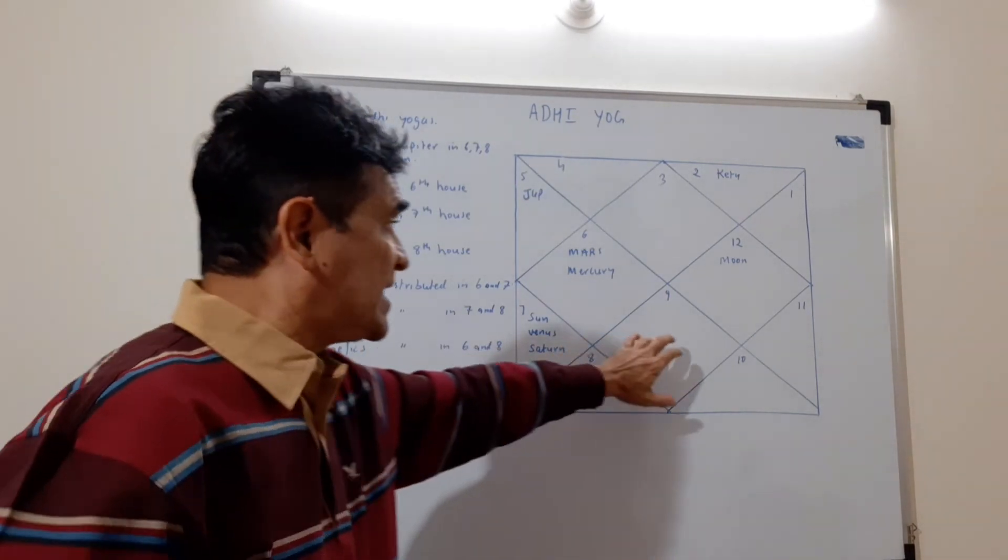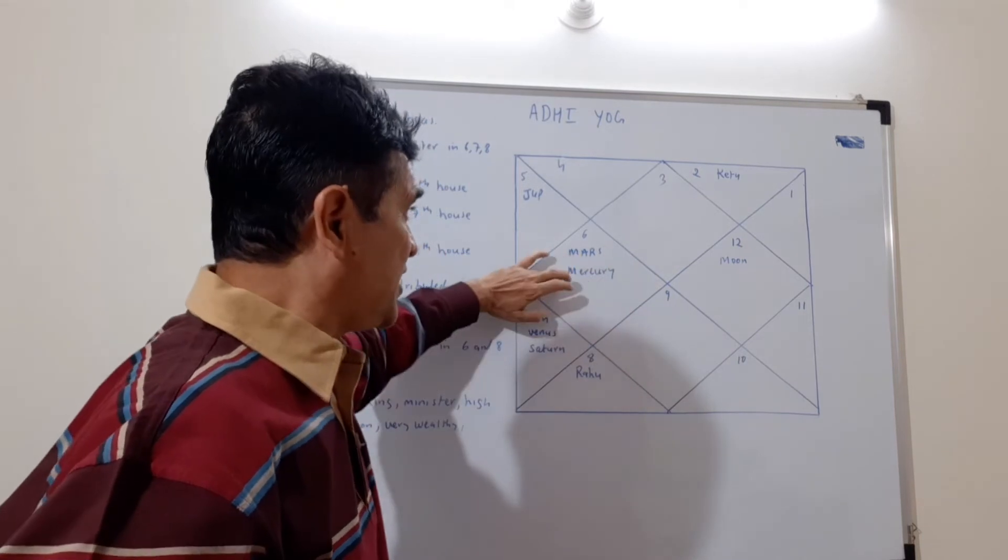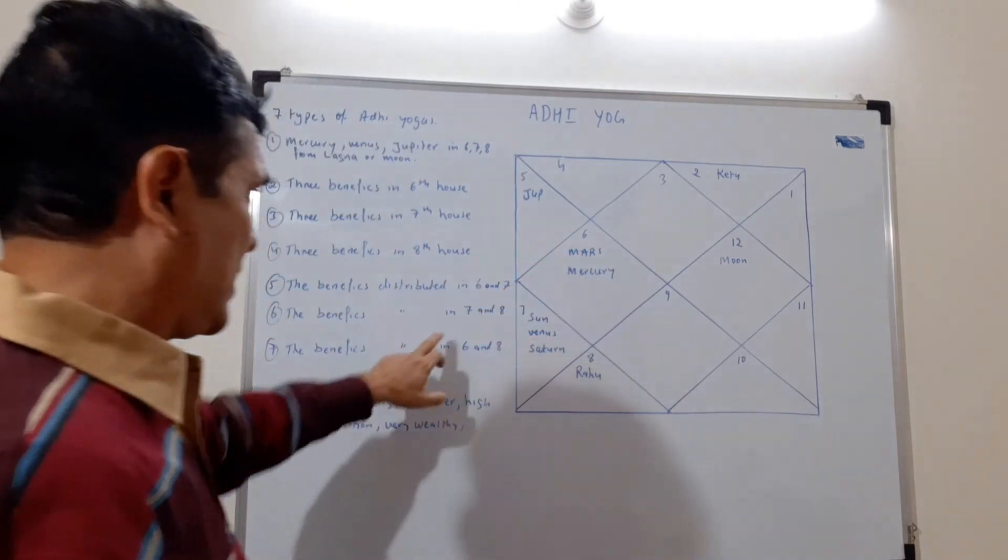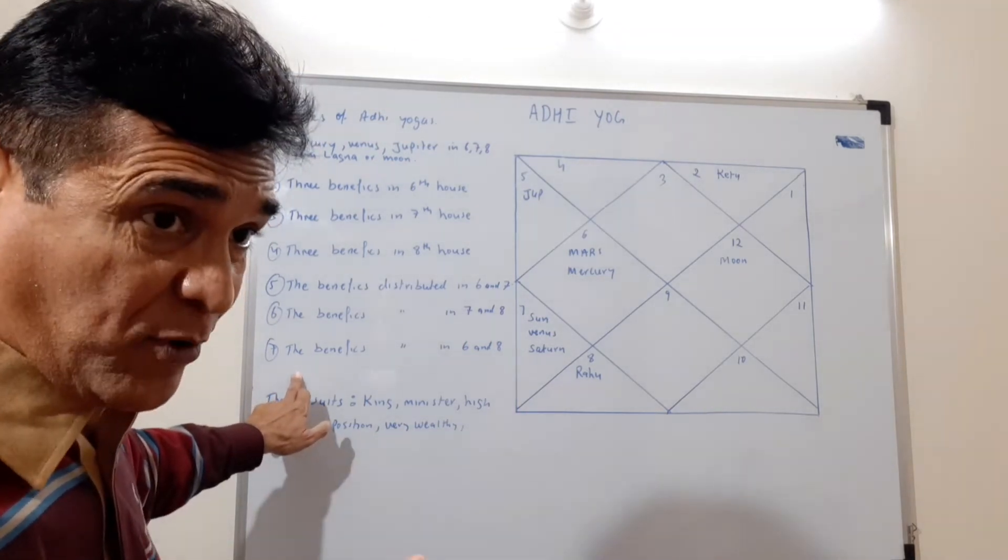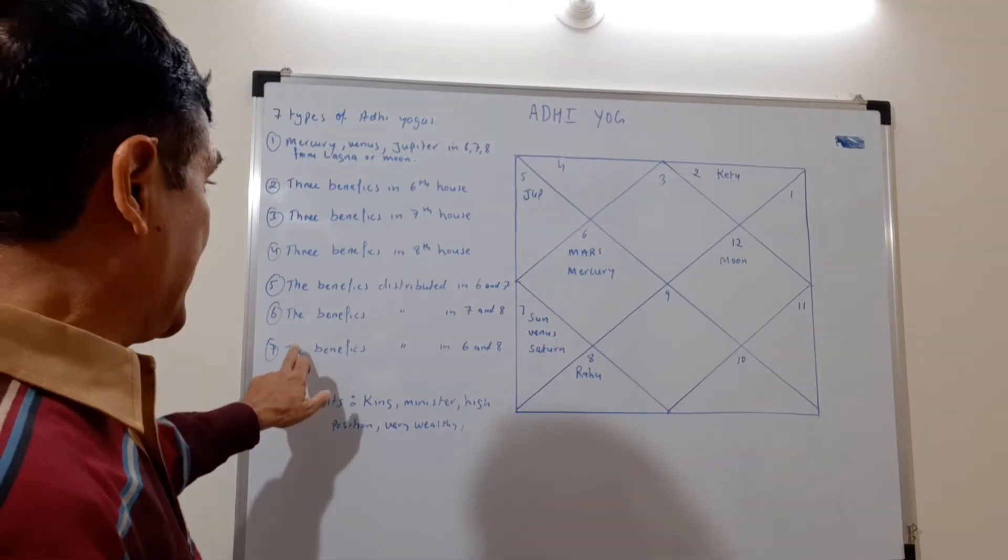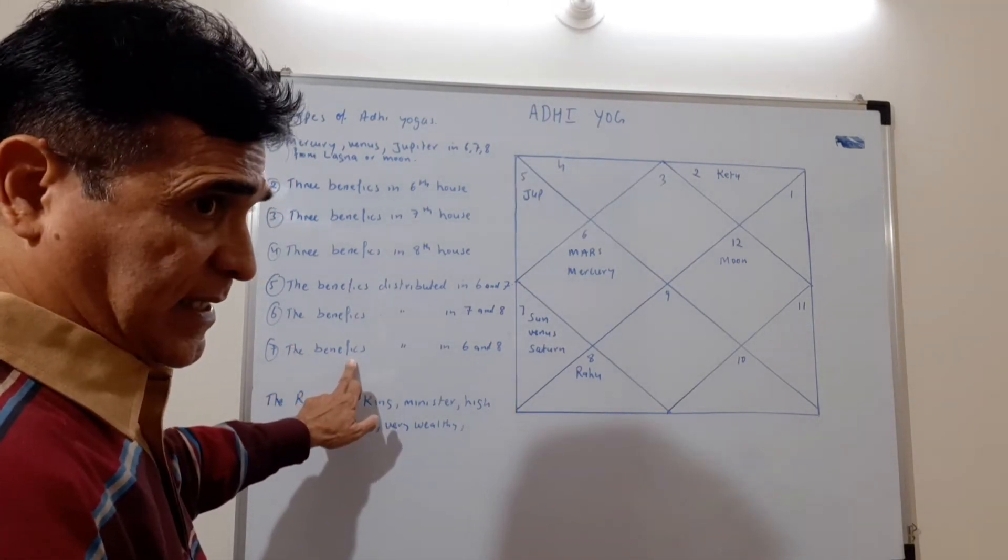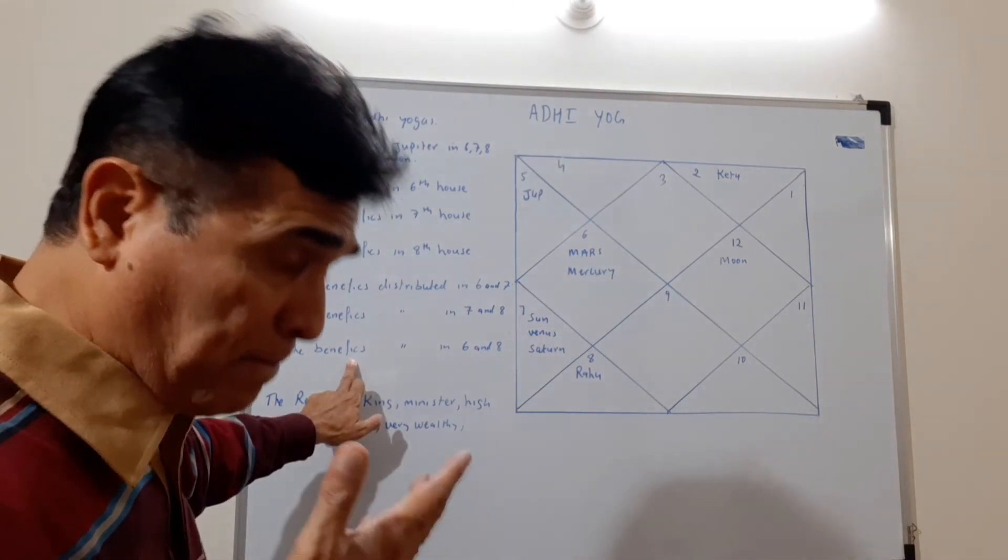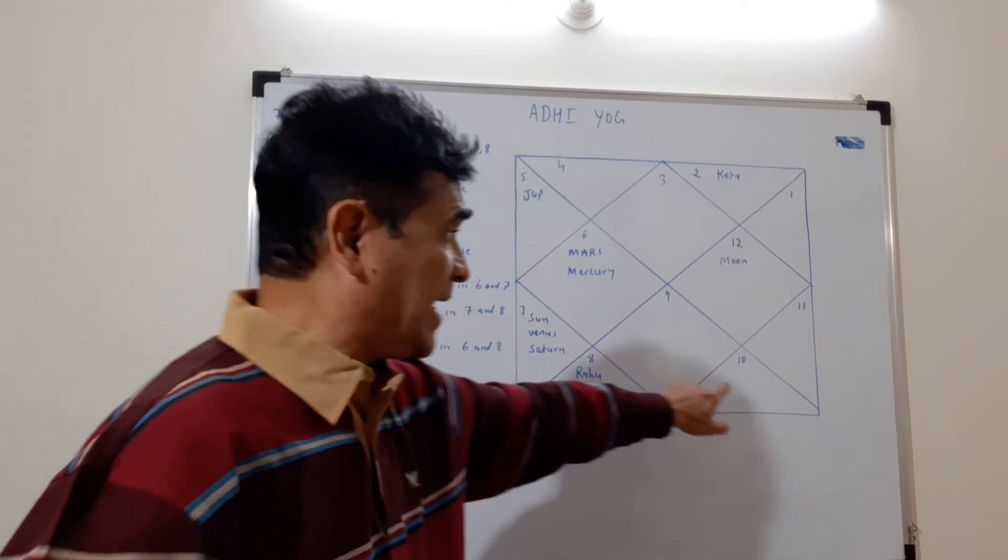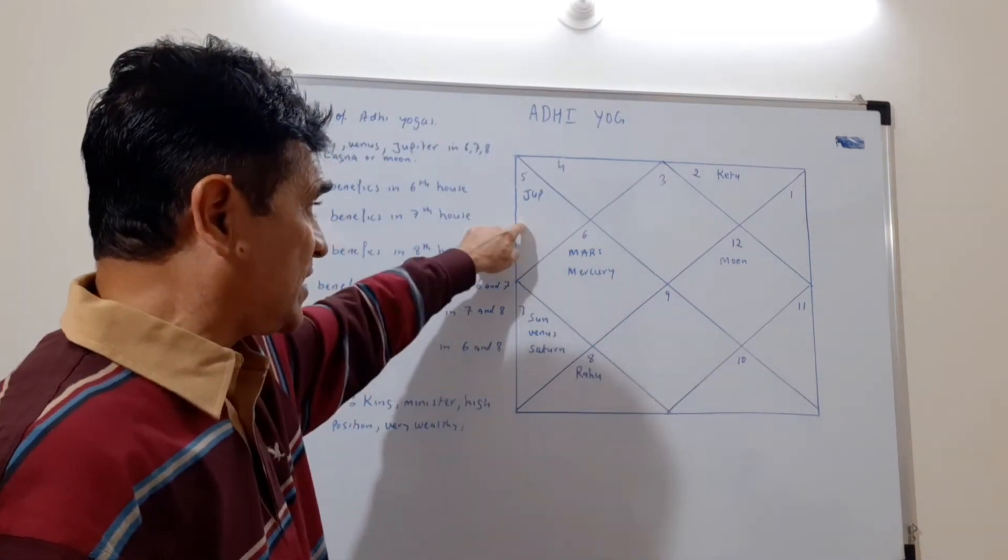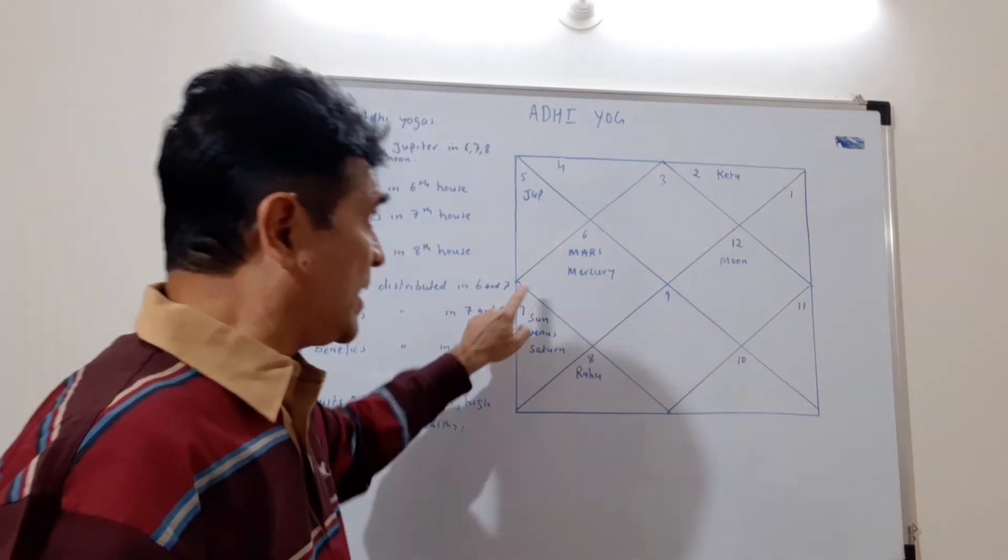The seventh and last type of Adhi Yoga would be the benefic Shubh Graha, benefics distributed between sixth and the eighth - sixth and eighth from the Moon and sixth and eighth from the Lagna.